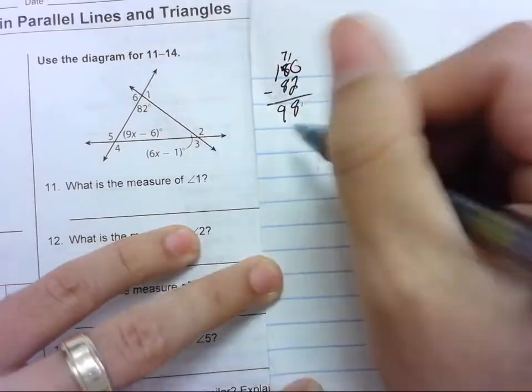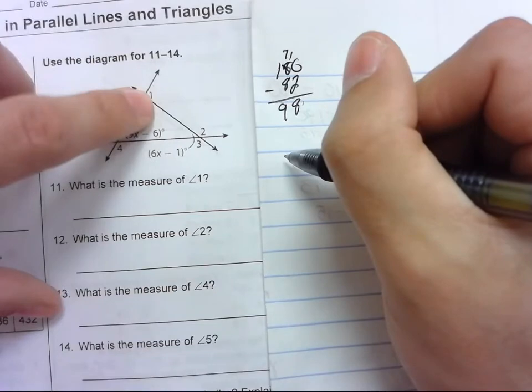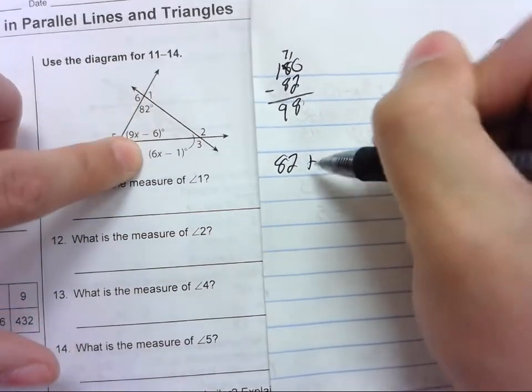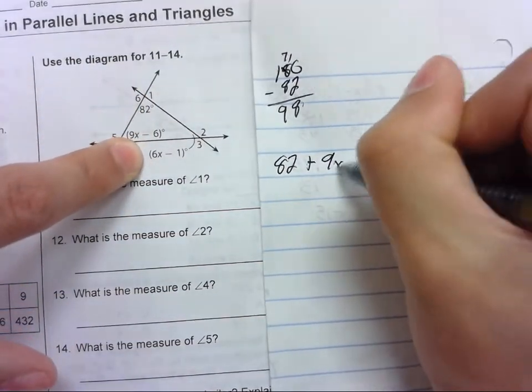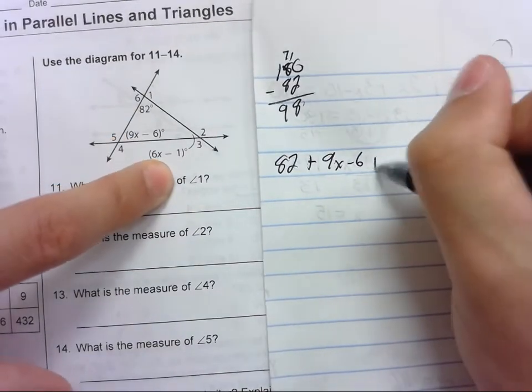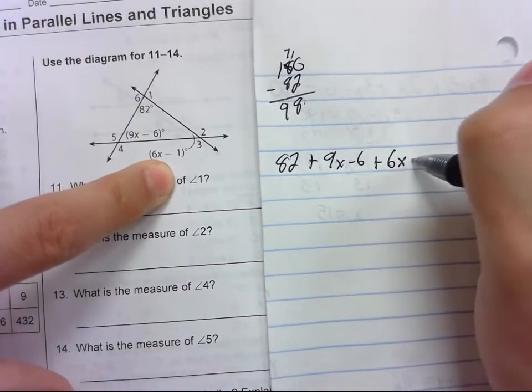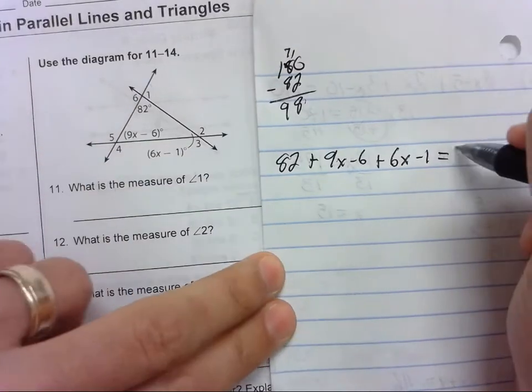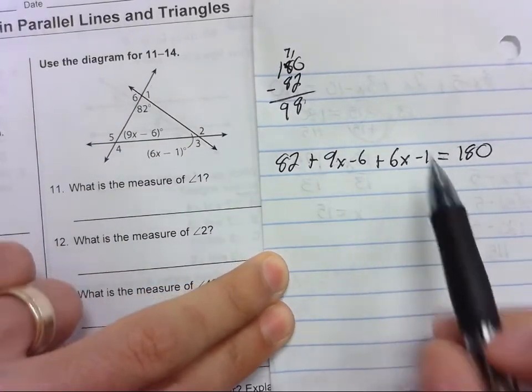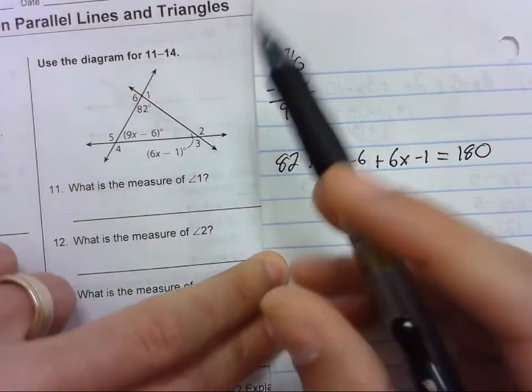And now we need to plug it in. So we know that this angle is 82, we're going to add this angle which is 9x minus 6, and we're going to add this angle which is 6x minus 1, and when we add them up we get 180. The three interior angles of a triangle equal 180.